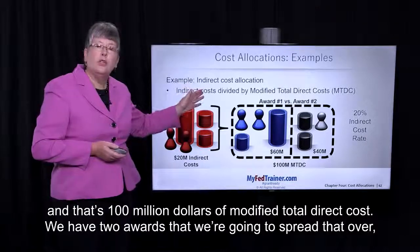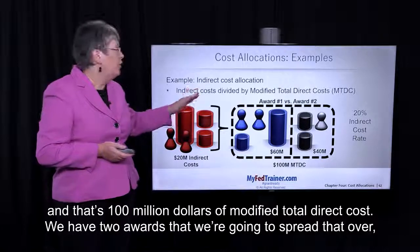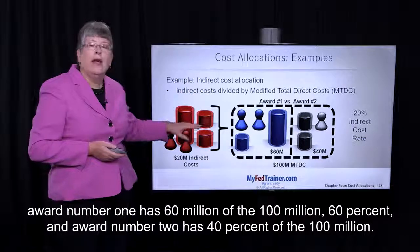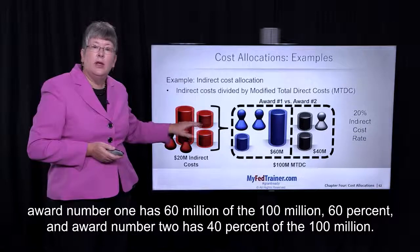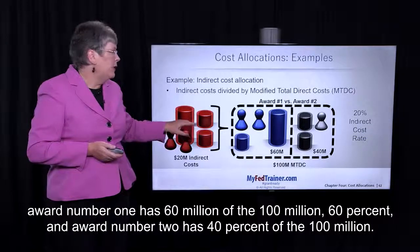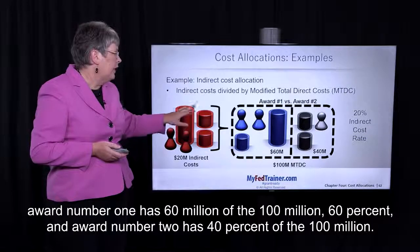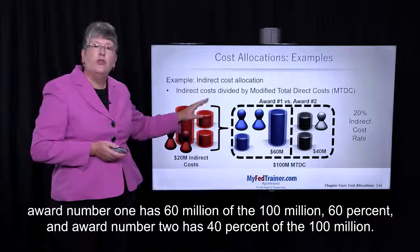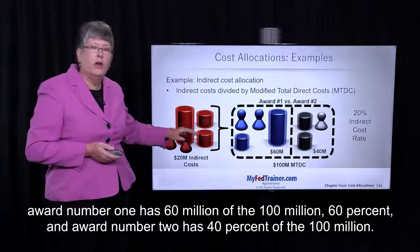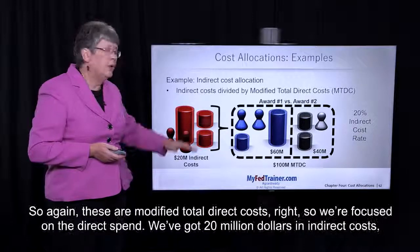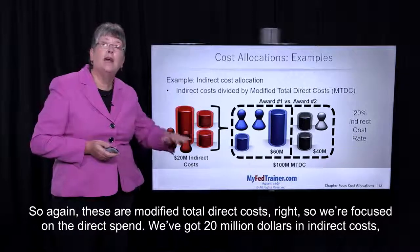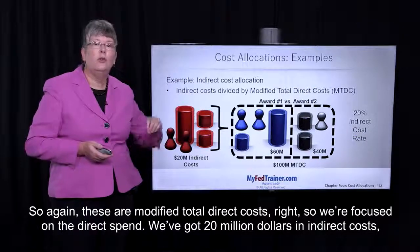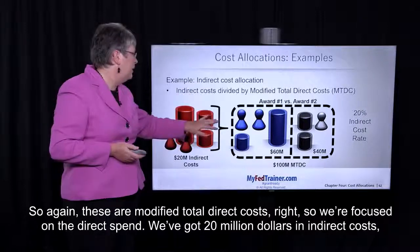We have two awards that we're going to spread that over. Award number one has sixty million of the hundred million — sixty percent — and award number two has forty percent of the hundred million. So again, these are modified total direct costs, so we're focused on the direct spend.